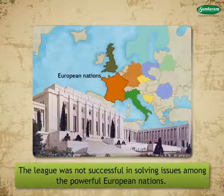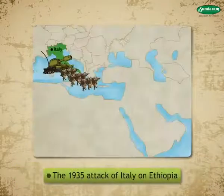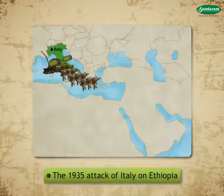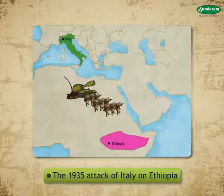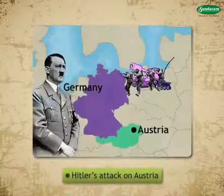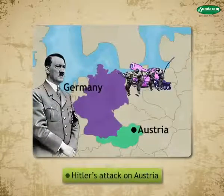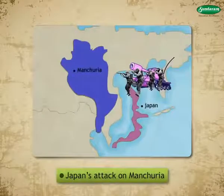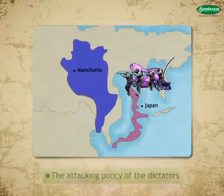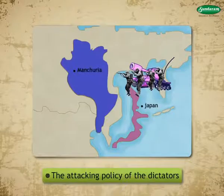Examples of the League's failure include the 1935 attack of Italy on Ethiopia in Africa, Hitler's attack on Austria, Japan's attack on Manchuria, and the attacking policy of the dictators.